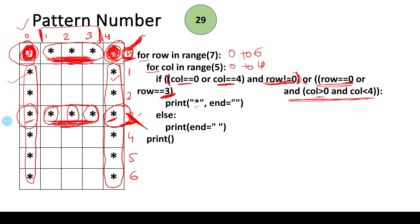In the next line, for printing stars I have given an empty string for the end parameter. As in the previous videos, the else statement prints a space, and there is another print statement for the newline. This pattern of print statements should be familiar from earlier videos.